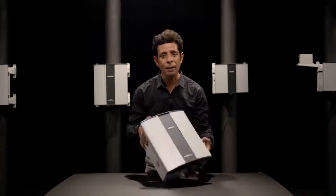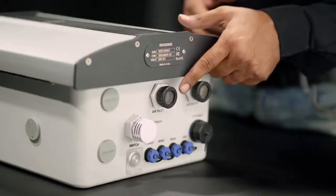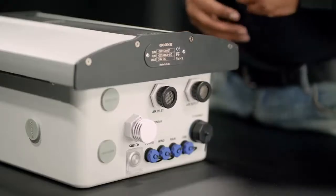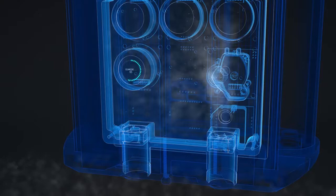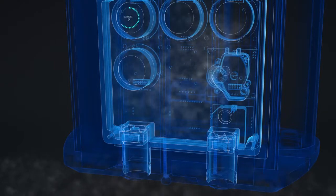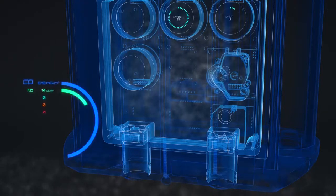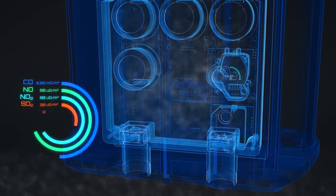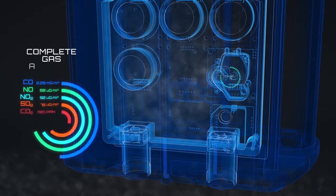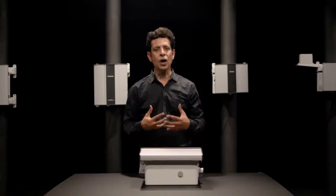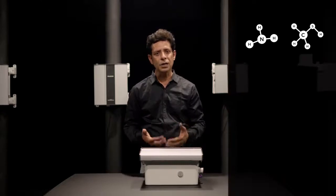OdourSense measures through active sampling by taking a sample of air through this inlet every 2 minutes. The sample of air is analysed by different gas sensors working on proven principles like electrochemical, NDIR, and PID to derive the concentration of gases like ammonia or mercaptans.